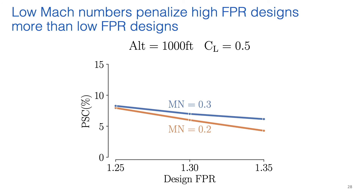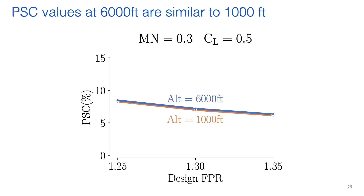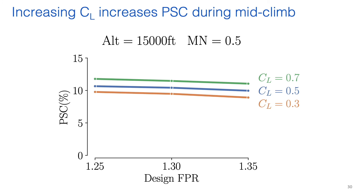We studied the sensitivity of PSC to lift coefficient at a low-speed, low-altitude flight condition, and the results show that PSC values increase uniformly across all fan pressure ratio designs as lift coefficient is increased. We also studied the sensitivity of PSC to Mach number at an altitude of 1,000 feet and a lift coefficient of 0.5. These results show that increasing Mach number benefits the high fan pressure ratio designs more. We then studied the sensitivity of PSC to altitude, and those results show that PSC values do not change much with respect to altitude at these flight conditions.